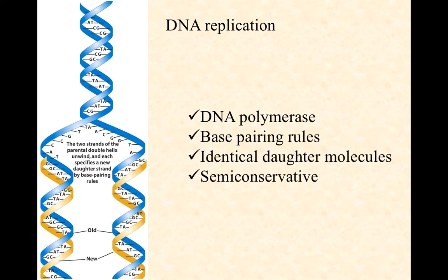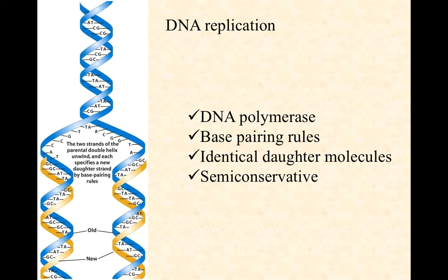The main enzyme involved here is one called DNA polymerase. As the name implies, it polymerizes DNA nucleotides to form a complete DNA nucleic acid, following the base pairing rules. The two daughter molecules in theory are identical to each other, though we know that at some particular rate DNA polymerase does make some mistakes, and we call those mutations.